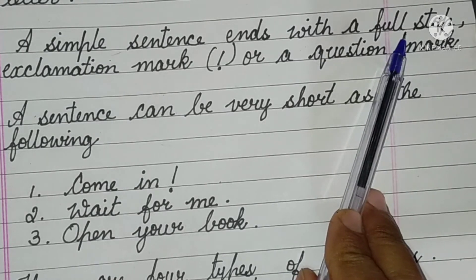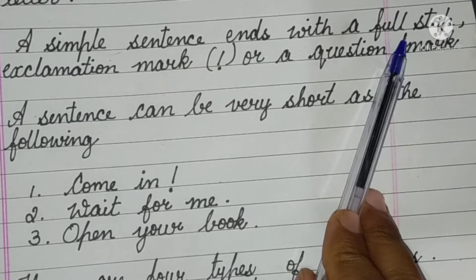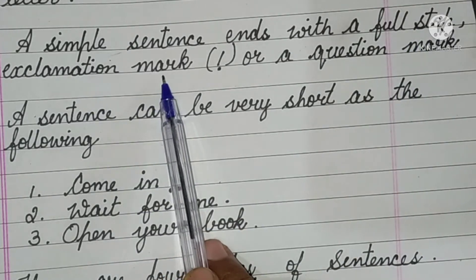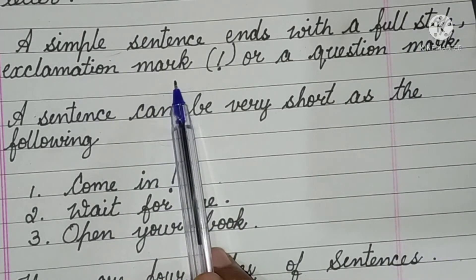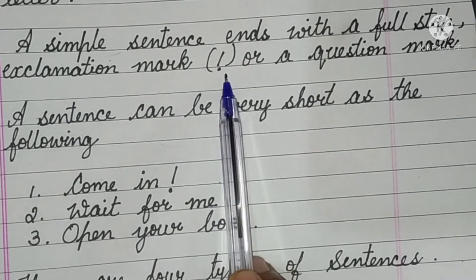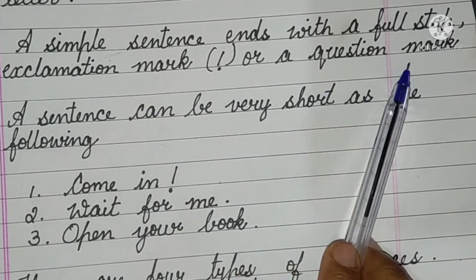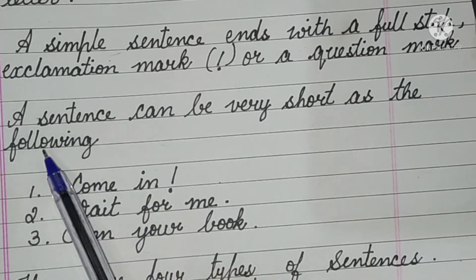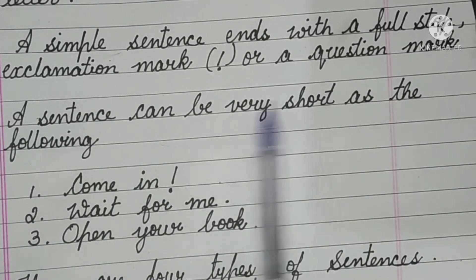A simple sentence ends with a full stop. Ek sadhaaran vakya jab poora hota hai to hum full stop ka use karte hain. It is very necessary — whenever you write a sentence, the first letter should be capital. At the end of the sentence we put a full stop, or an exclamation mark for sudden expressions, or a question mark if it is a question.